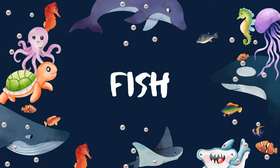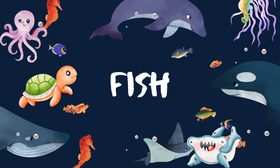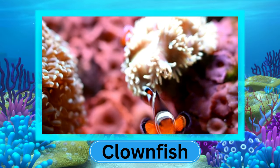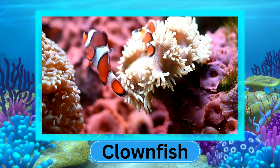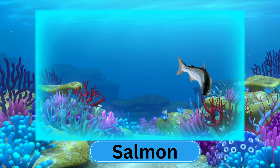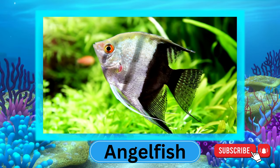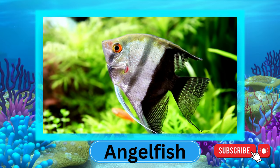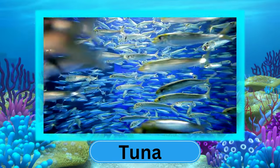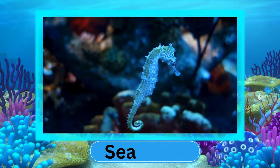Fish. Fish are the most diverse group of vertebrates. They come in various shapes, sizes, and colors. Let's see some common examples: Clownfish, Salmon, Angelfish, Tuna, and Seahorse.